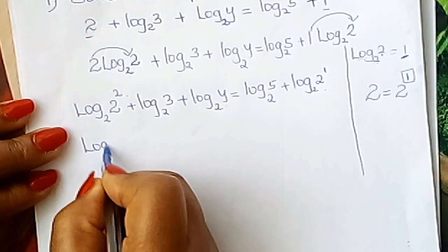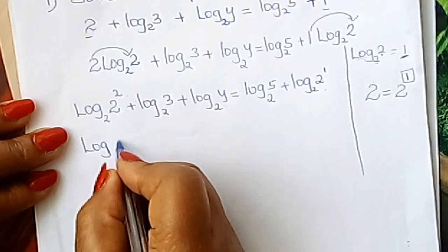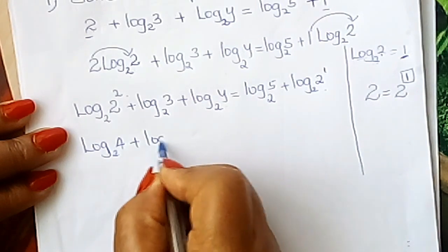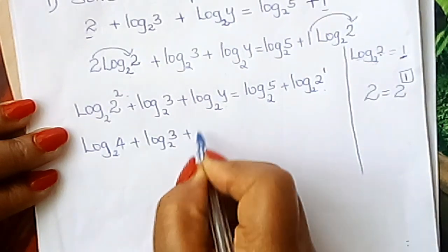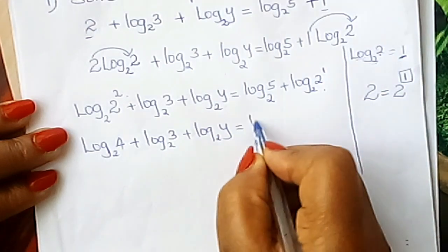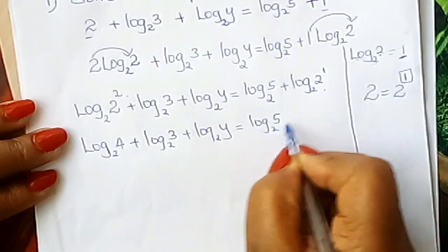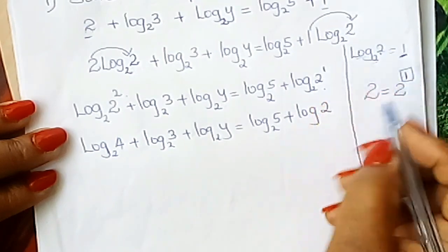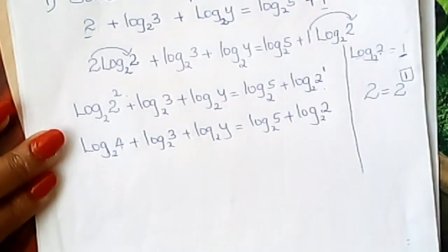It will be plus log₂(2¹) there. So we simplify this. Log 2², sorry, 2 squared is 4. You write base 2 there. Log₂4 + log₂3 + log₂y = log₂5 + log₂2. Good.